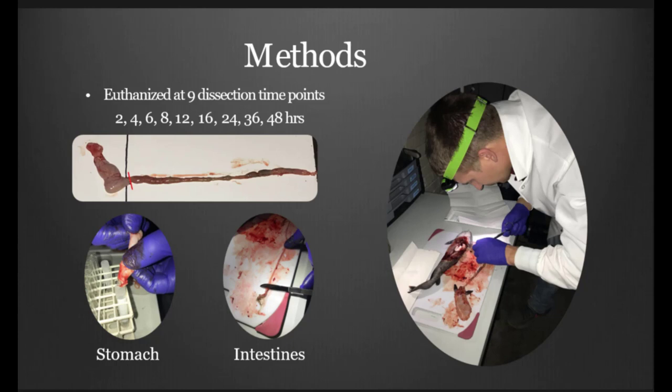We dissected the entire alimentary canal from the esophagus all the way to the anus. We separated it where the stomach emptied into the intestines. We squeezed out the contents from both the stomach and the intestines and got the wet weights of that content.